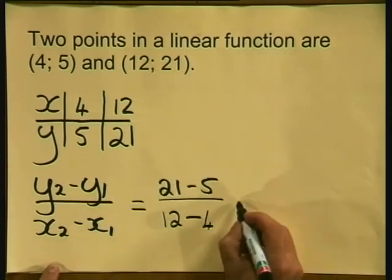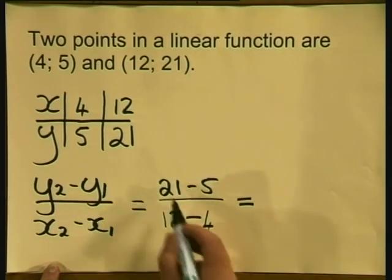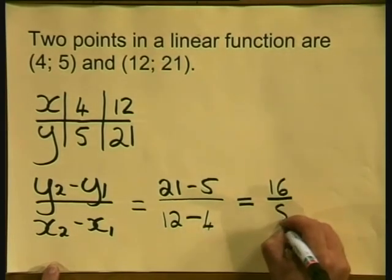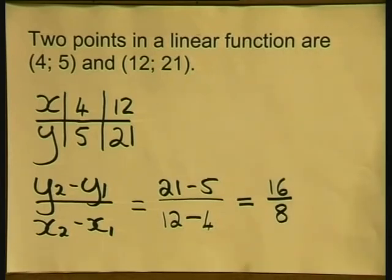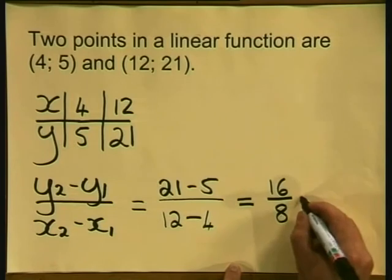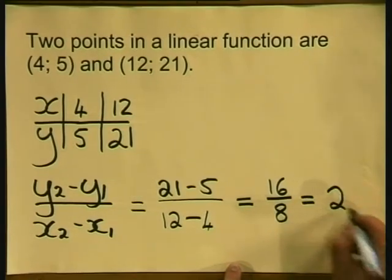Now we can simplify this to become the following. 21 minus 5 is 16 divided by 12 minus 4 is 8. Now we divide the 16 by the 8 and we see that the gradient is equal to 2.